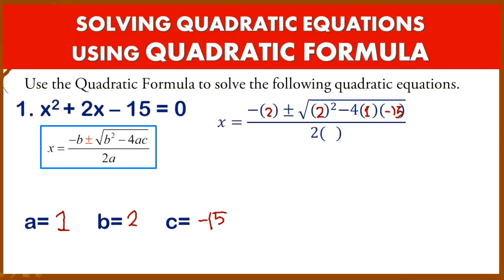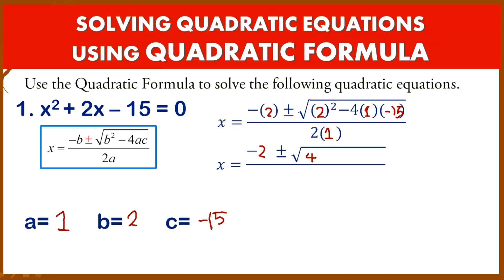Now simplify. The denominator is 2A, that is 2 times 1, which equals 2. Negative times 2 is negative 2. Then 2 squared is 4. Negative 4 times 1 is negative 4. Negative 4 times negative 15 is positive 60, so you have plus 60. In the denominator, 2 times 1 is simply 2.